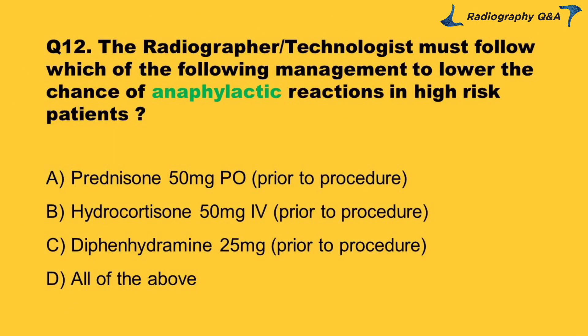Question 12: The radiographer/technologist must follow which of the following management to lower the chance of anaphylactic reactions in high-risk patients? Option A: prednisone 50 mg PO prior to procedure. Option B: hydrocortisone 50 mg IV prior to procedure. Option C: diphenhydramine 25 mg prior to procedure. Option D: all of the above. Right answer is Option D.